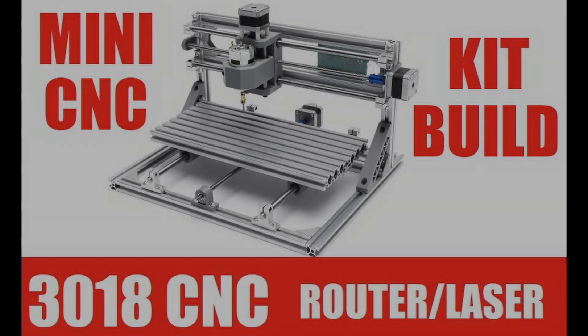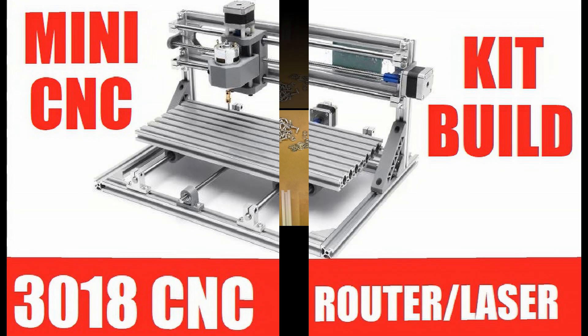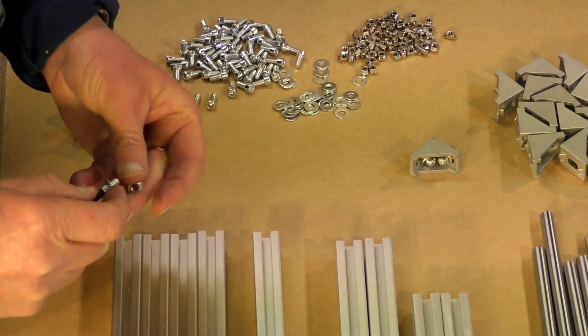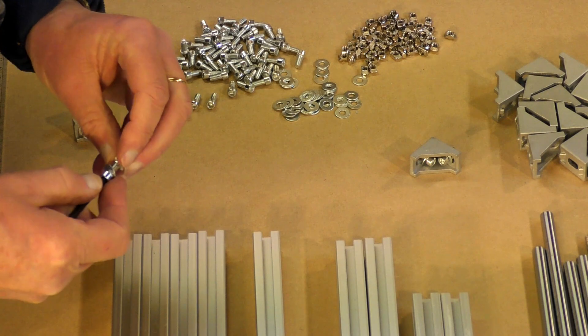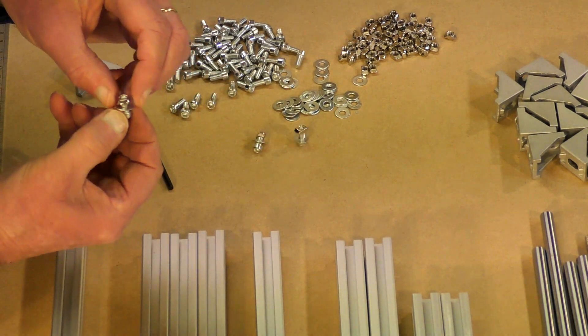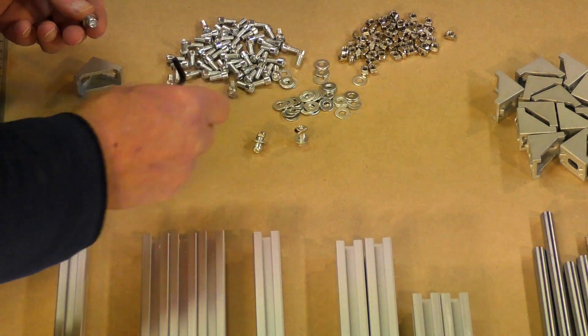Hello, welcome to this mini CNC router 3018 build. Basically the main structure is 20 by 20 millimeter extruded aluminum of fairly high quality.